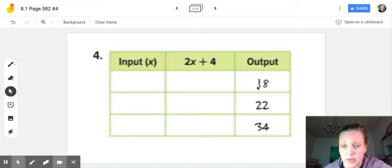So we know that the output is 18 when we do this to the x value or the input. So we're going to undo it using inverse operations, and we're going to go in reverse order from order of operations.